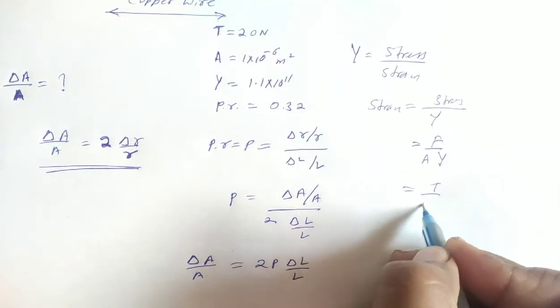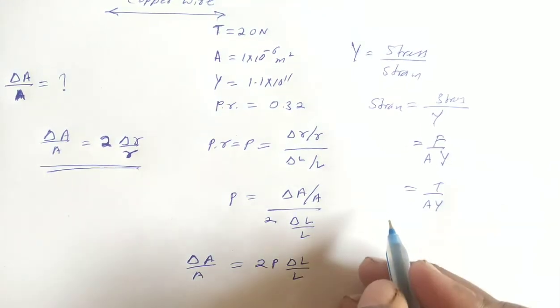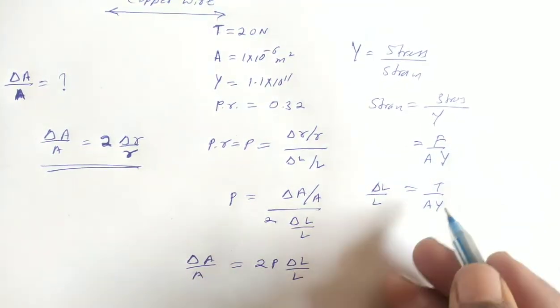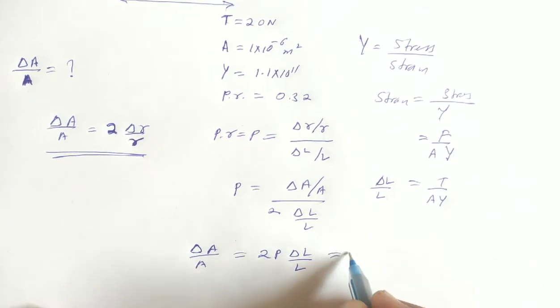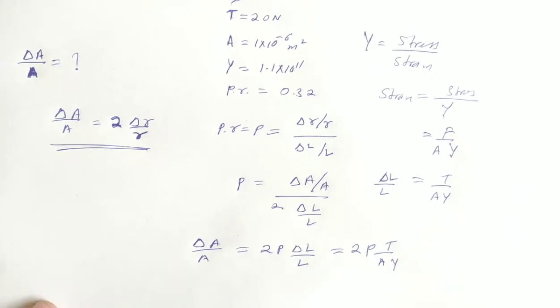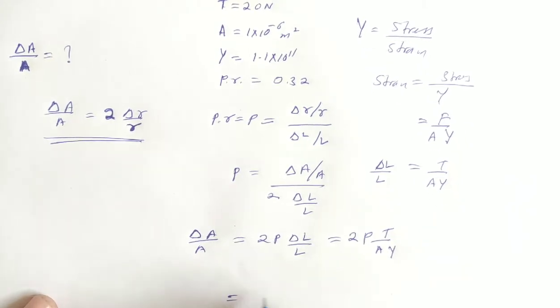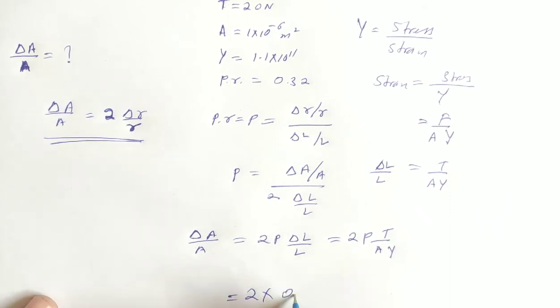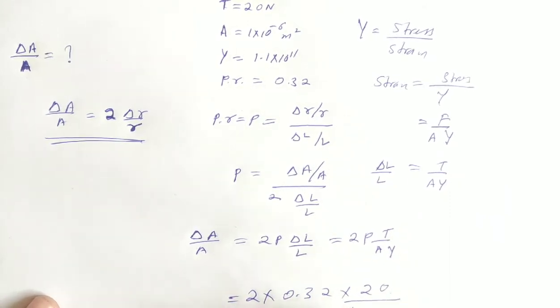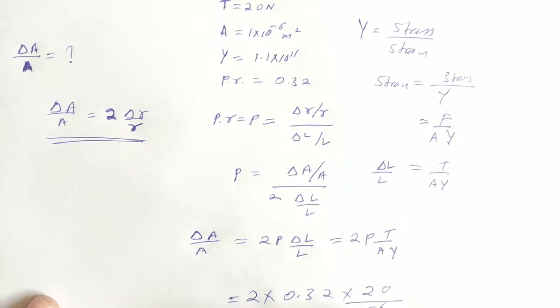Here we have delta A by A into Young modulus. This is a strain. Here we have delta L by L. Then we have delta A by A equal to 2 Poisson ratio delta L by L. Here we have delta A.